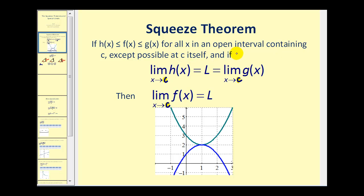And if the limit as x approaches c of h of x is equal to L, which is equal to the limit as x approaches c of g of x — so if both of these limits are equal to L — then the limit as x approaches c of f of x must also equal L.